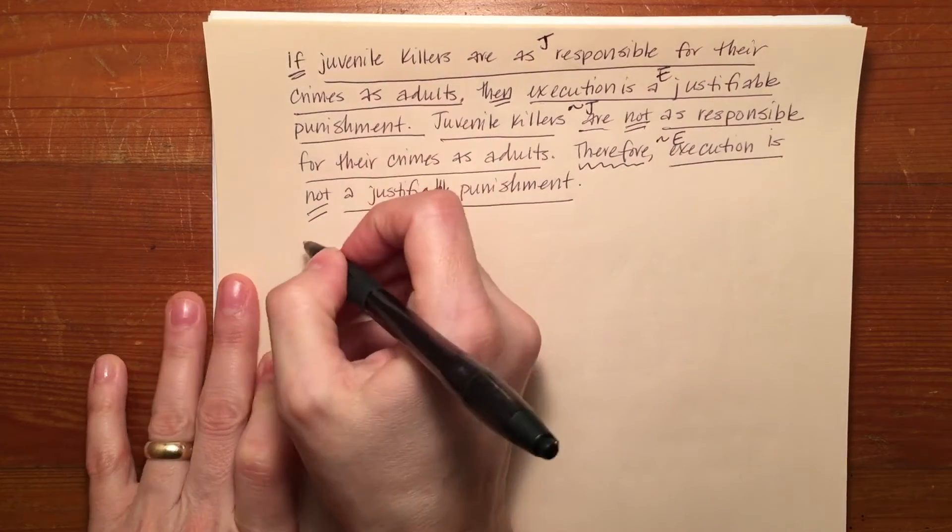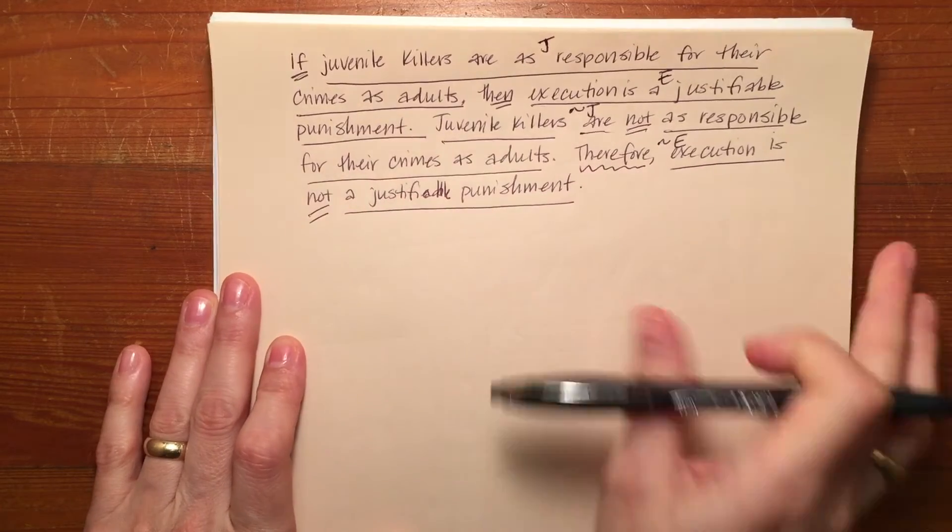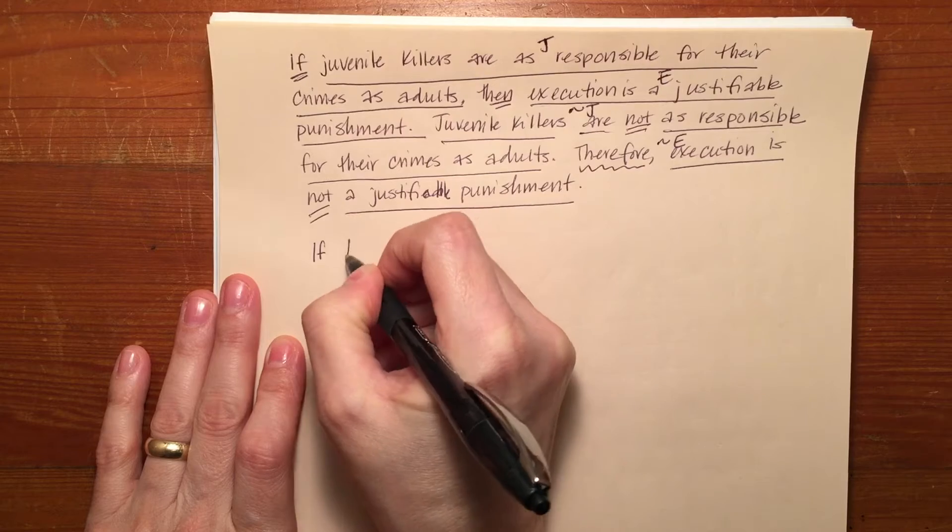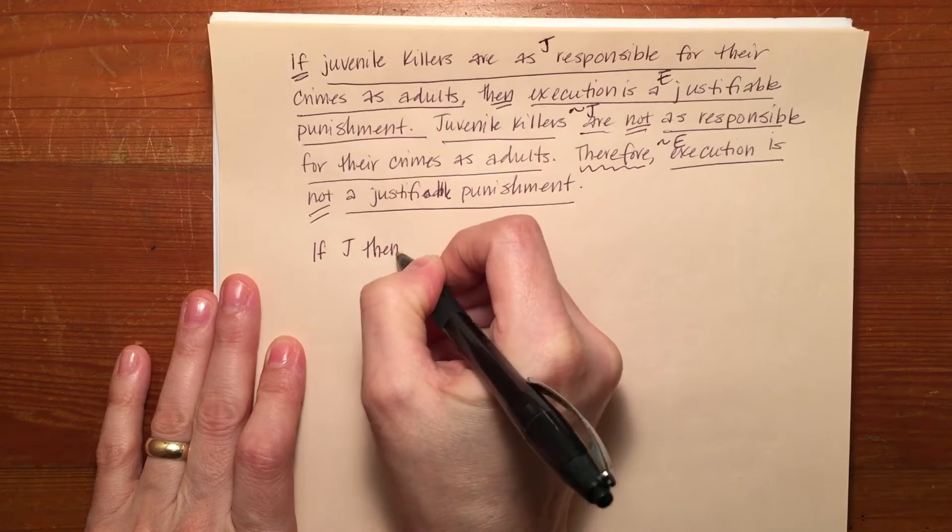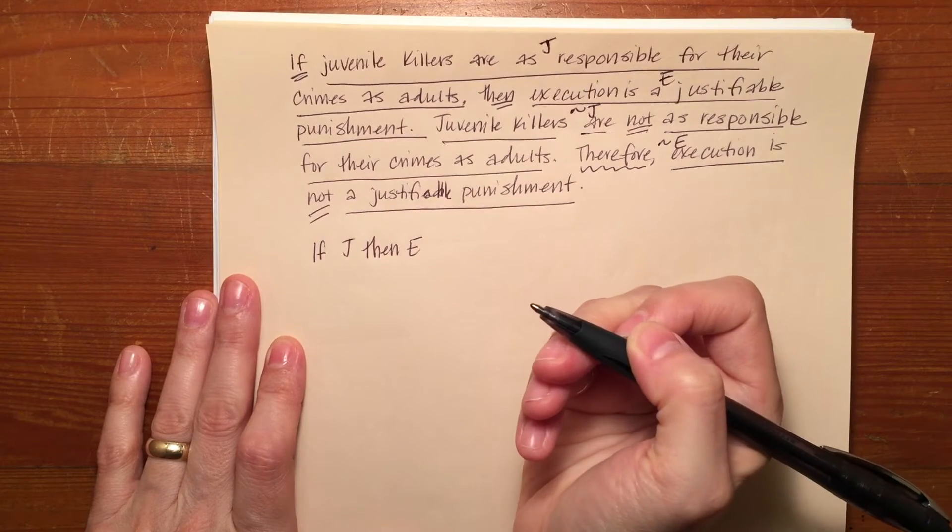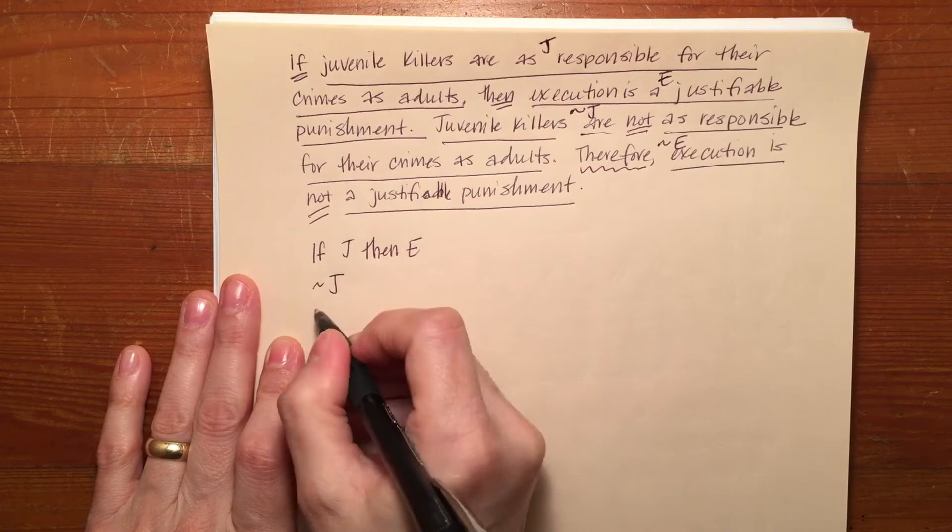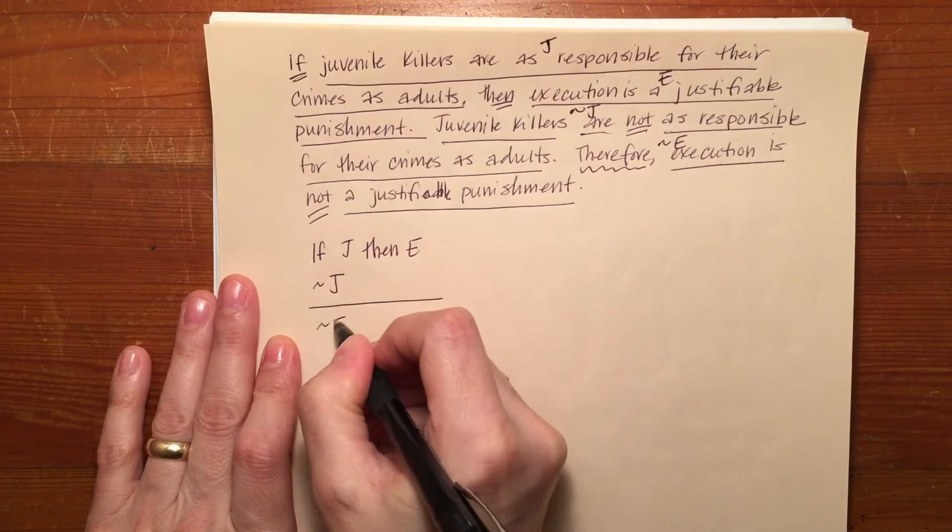If we do a preliminary look at what standard form would be, it might look like this: If J, then E. Not J, therefore not E.